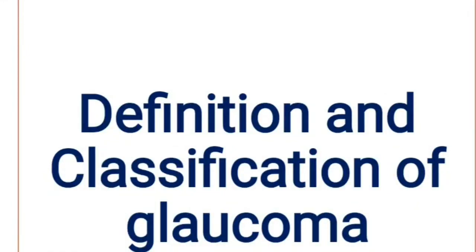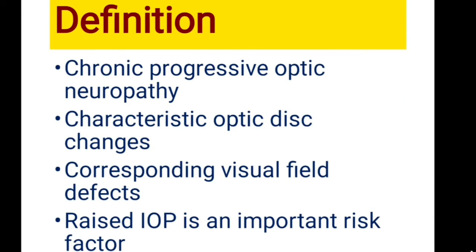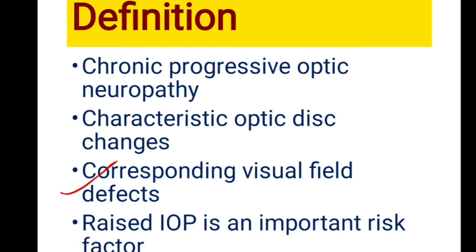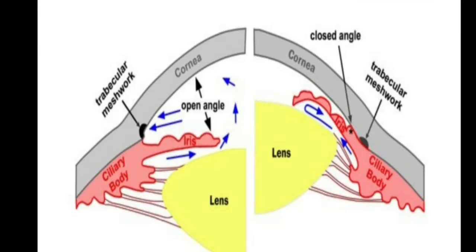Hello everyone, welcome back to my YouTube channel — Dr. Barkis Ophthalmology Tutorials. Today we will discuss the definition and classification of glaucoma. It's a short video focused on classification. Coming to the definition, I have explained each word in my previous video on the glaucoma introduction, so please go back and watch that. To define it again: it's a chronic progressive optic neuropathy with characteristic optic disc changes and corresponding visual field defects, for which raised intraocular pressure is an important risk factor.